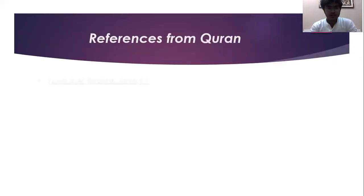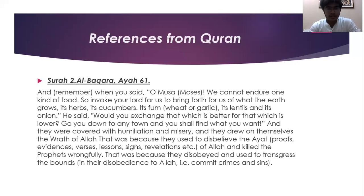References from Quran: Surah 2 Al-Baqarah, Ayah 61: 'And when you said, O Musa, we cannot endure one kind of food. So invoke your Lord for us to bring forth for us of what the earth grows — its herbs, its cucumbers, its garlic, its lentils, and its onions. He said: Would you exchange that which is better for that which is lower? Go down to any town and you shall find what you want.' And they were covered with humiliation and misery, and they drew on themselves the wrath of Allah. That was because they used to disbelieve the signs of Allah and kill the prophets wrongfully, and because they disobeyed and used to transgress the bounds.